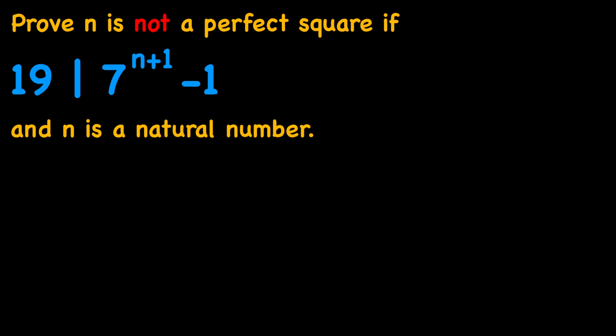In this video we're going to be solving a nice number theory problem in which we are given that 19 divides 7 to the power of n plus 1 minus 1, where n is a natural number. We want to prove that n is not a perfect square.